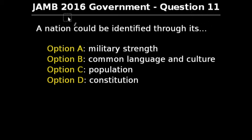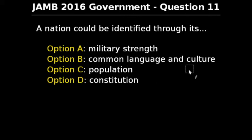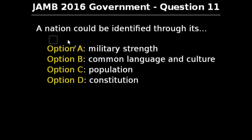Question 11 of JAM 2016 government exam says: a nation could be identified through its — option A: military strength, option B: common language and culture, option C: population, option D: constitution. To answer this question we need to first define what a nation is. A nation is a large group of people living in one area with